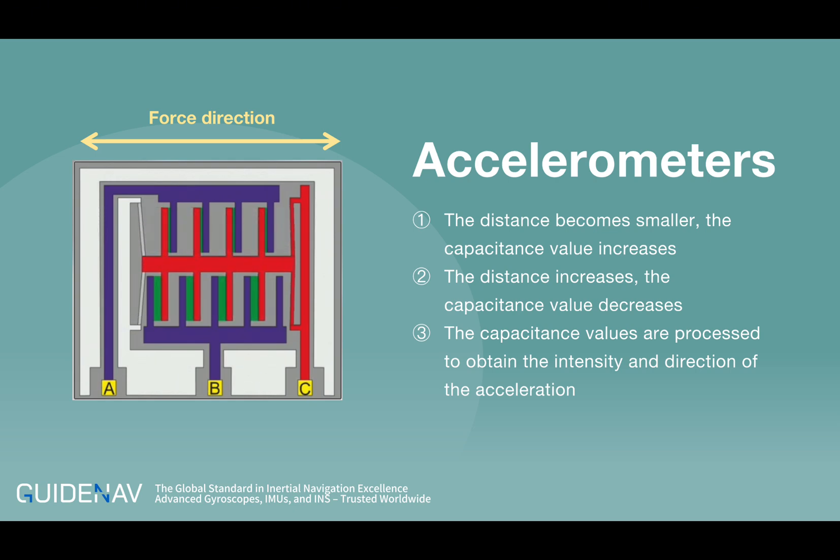If the distance increases, the capacitance value decreases. Depending on how the capacitance changes between the connection points A and C or B and C, the digital electronics of the sensor can determine the strength and direction of the acceleration.